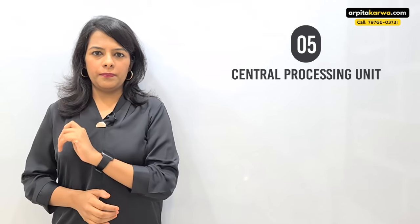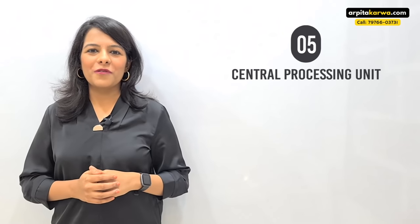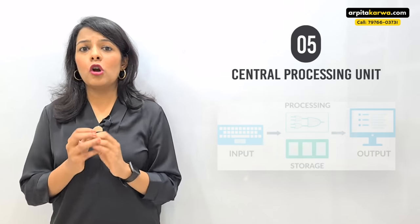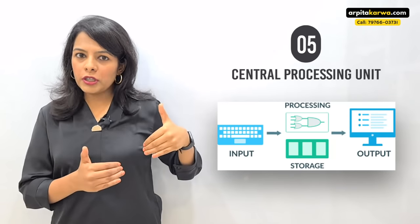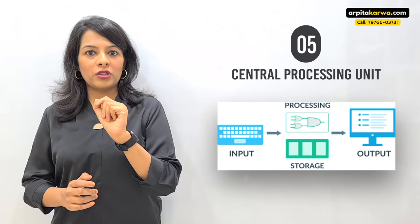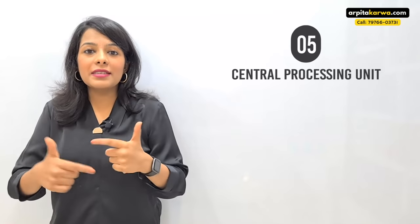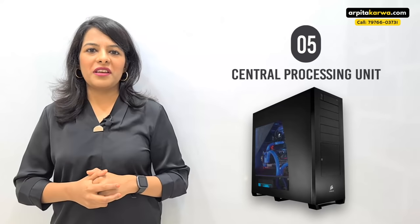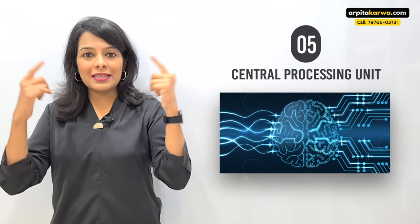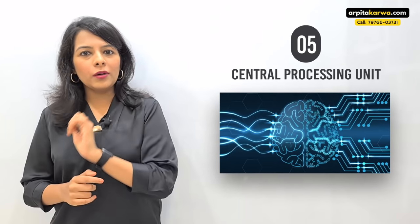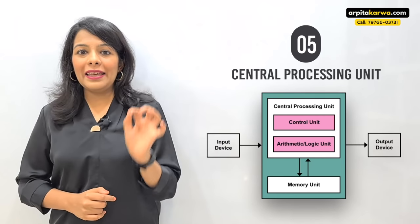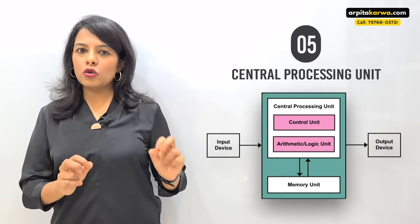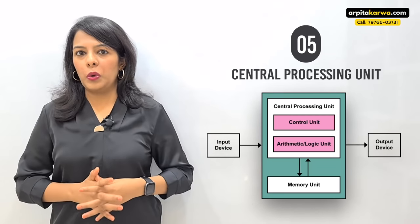Before ending this video, I want to cover another important sub-topic: the Central Processing Unit, or CPU. Going back to the definition of a computer — we discussed that it takes input and shows output. The processing of information is handled by the CPU. The CPU is known as the brain of the computer. From a NET exam perspective, you need to know its two components: CU, that is the Control Unit, and ALU, that is the Arithmetic Logical Unit.